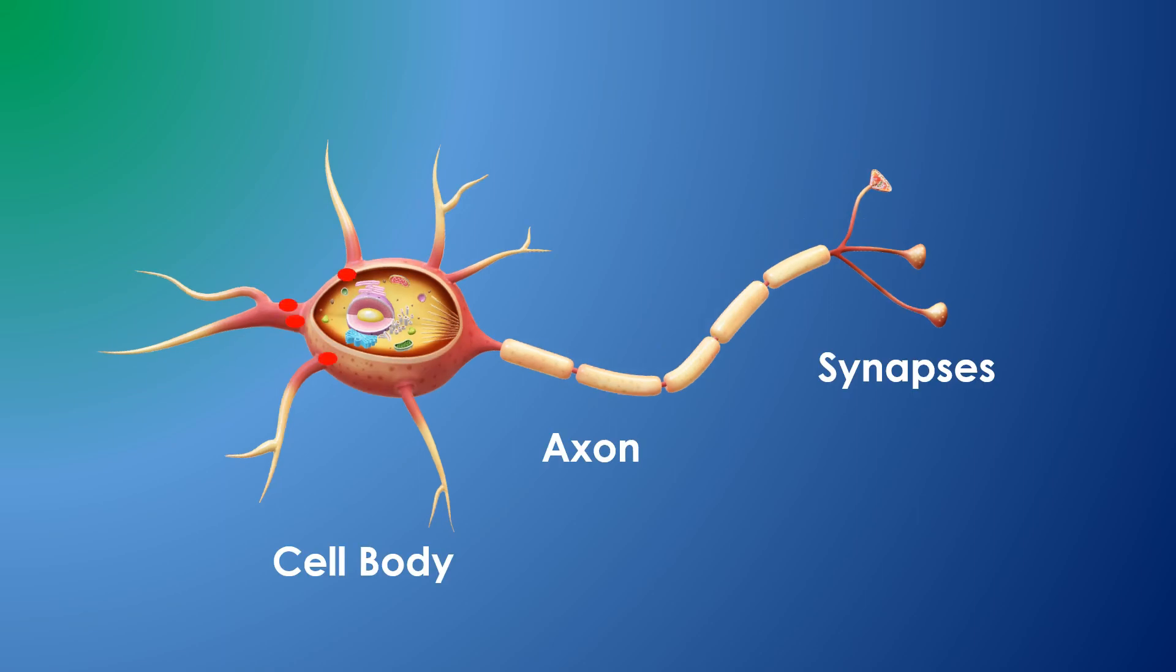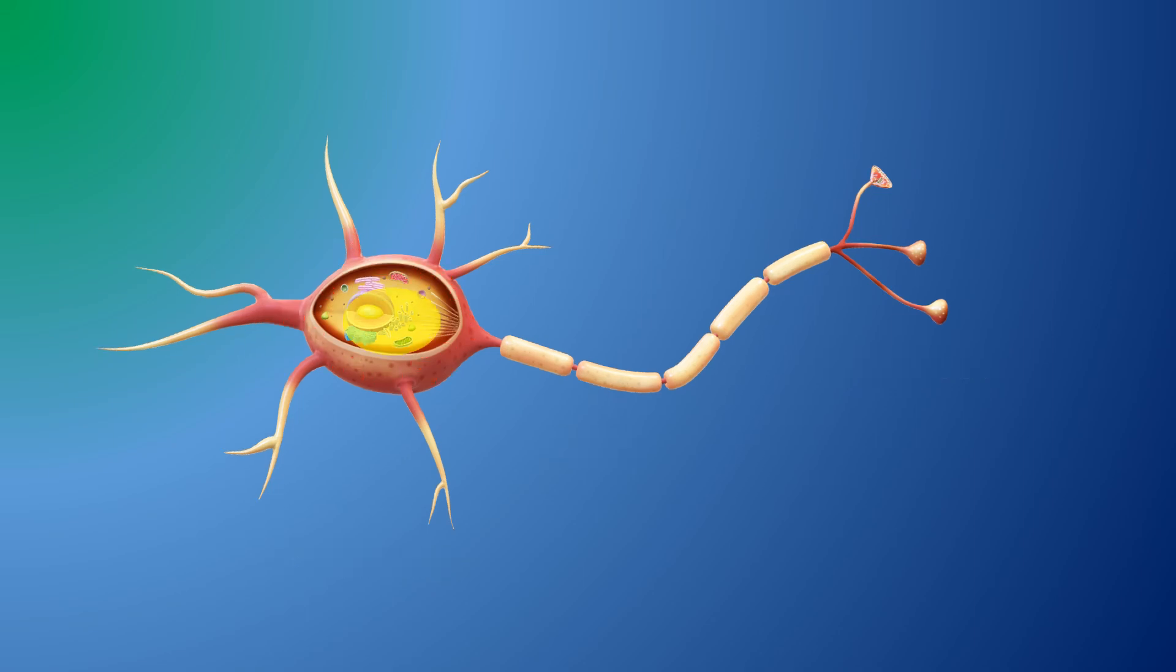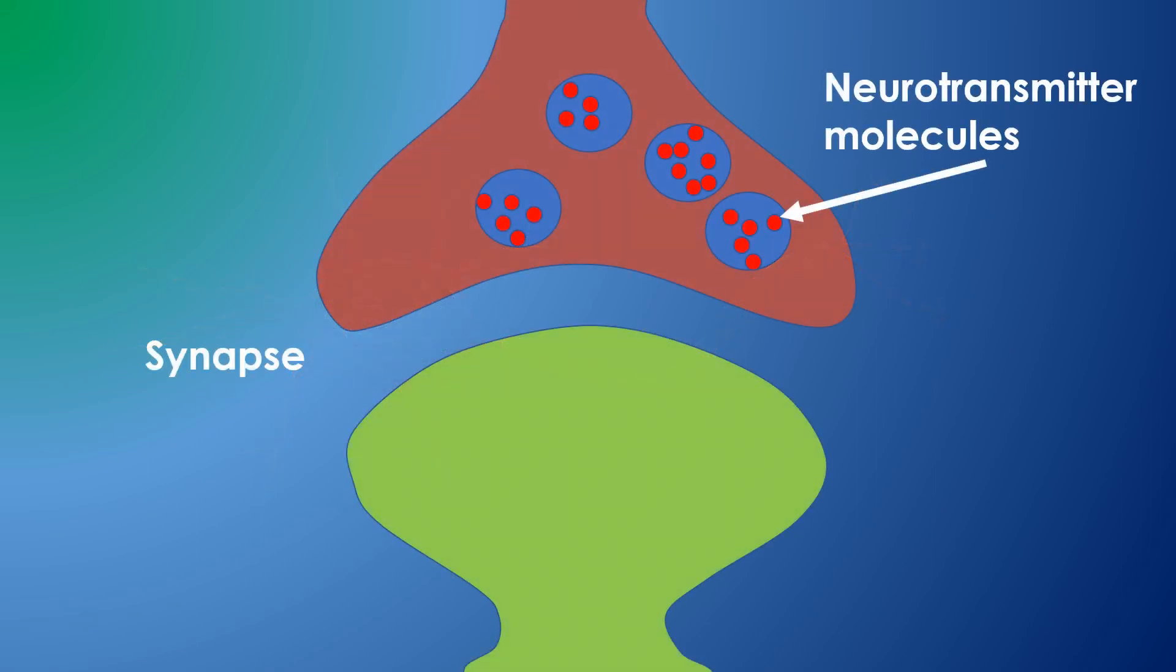Recall from the last video that a neuron works by accumulating the electronic charge of neurotransmitter molecules. Once a threshold is reached, the neuron fires and sends a neural pulse down its axon to the synapses which connect it to other neurons. Synapses then transfer neurotransmitter molecules to the target neuron.